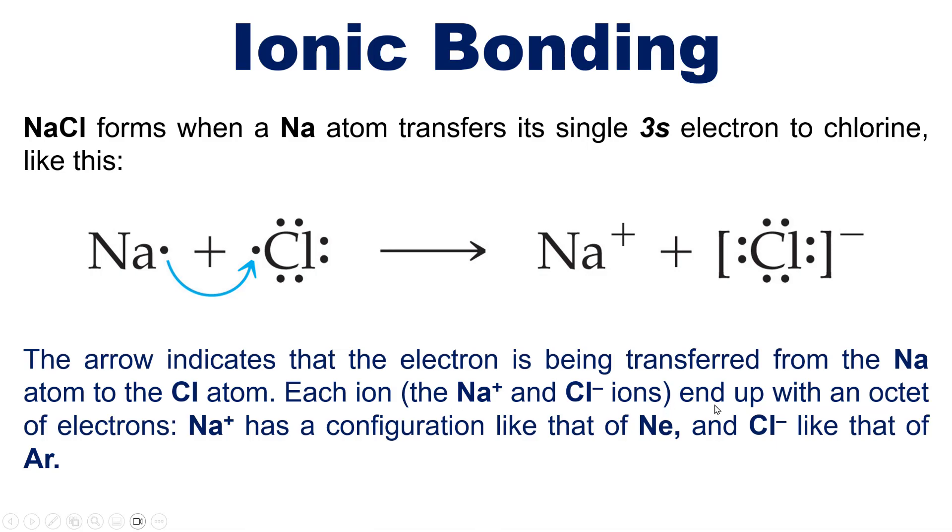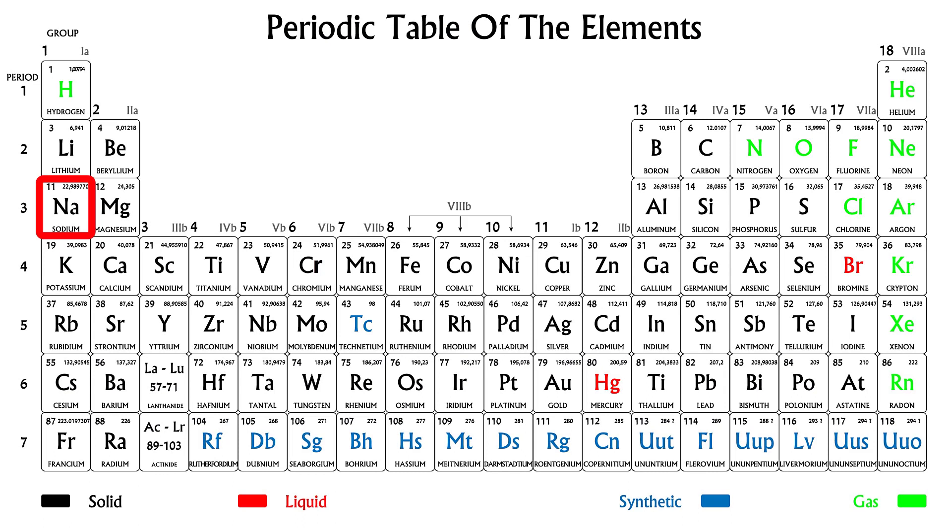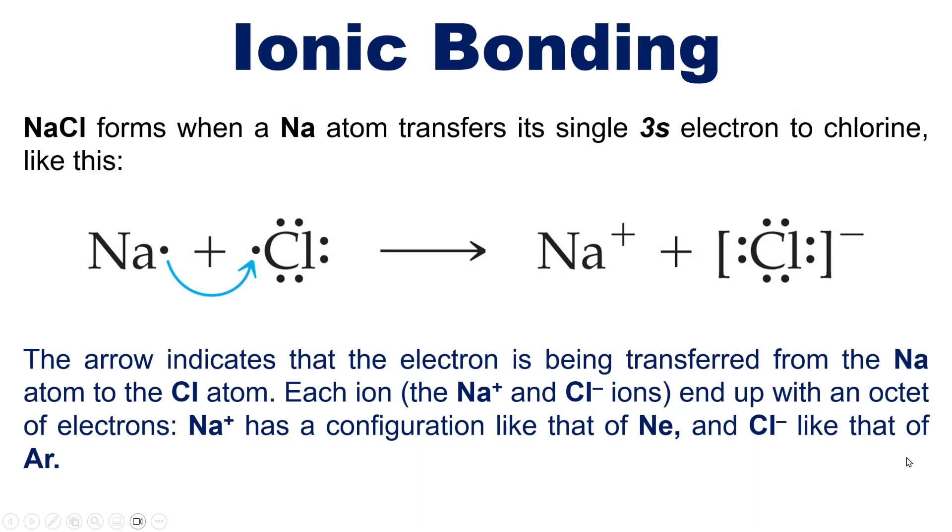Each ion, that is the sodium cation and chloride anion, end up now with an octet of electrons. Sodium ends up having a configuration like that of the noble gas neon, which is the noble gas that precedes it, because it loses its outermost 3s valence electron and now has eight valence electrons that were buried in its lower inner shell. Chloride ends up with a noble gas configuration like that of argon. Makes sense, good.